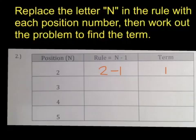The next row, my position number that I want to use is 3. So I need to put 3 minus 1. That's 2.